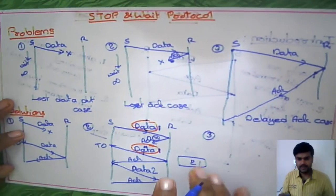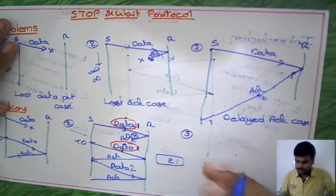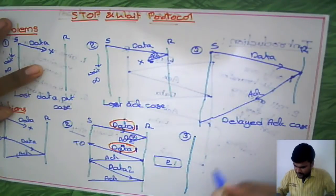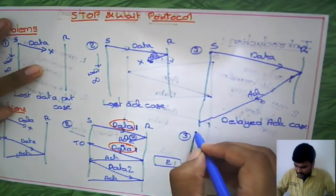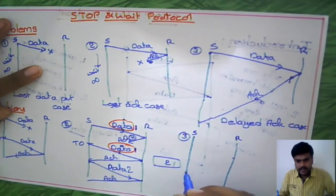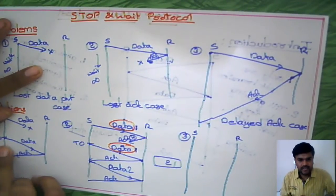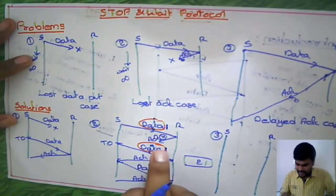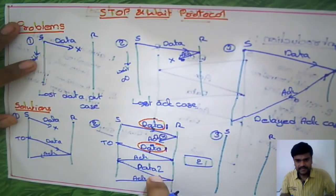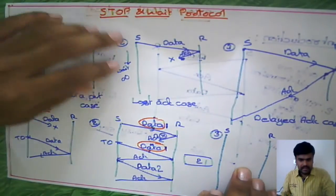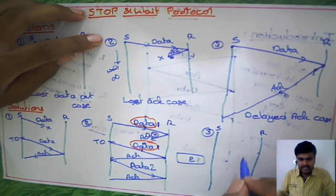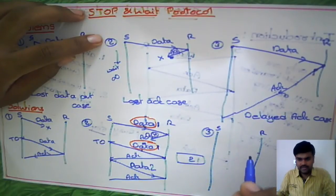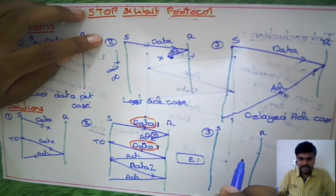Now the solution for the third problem — the delayed acknowledgement case. In this case, we already have the timeout concept and sequence numbers for data packets. After applying these, let us see whether we get the solution or if we need anything extra to solve the delayed acknowledgement case.